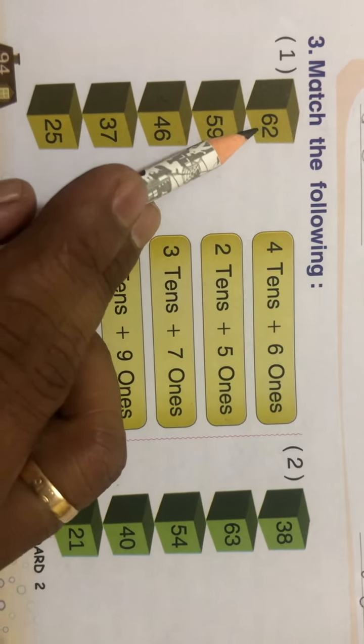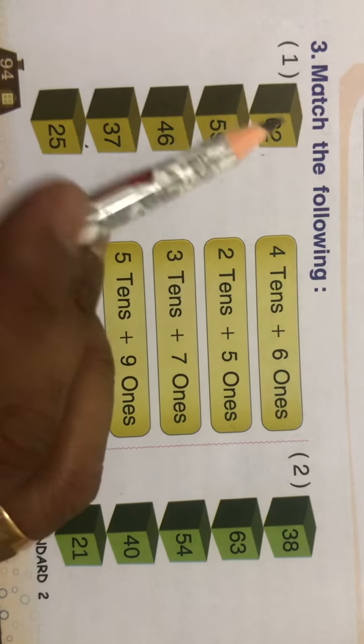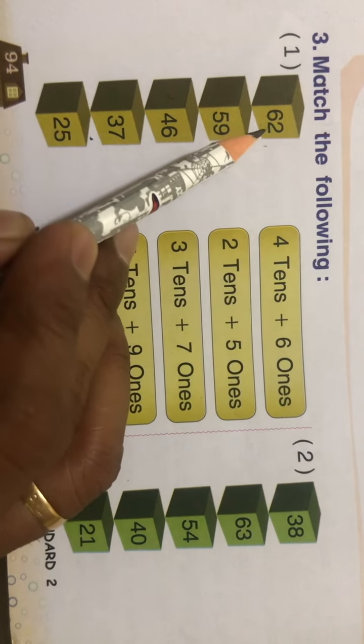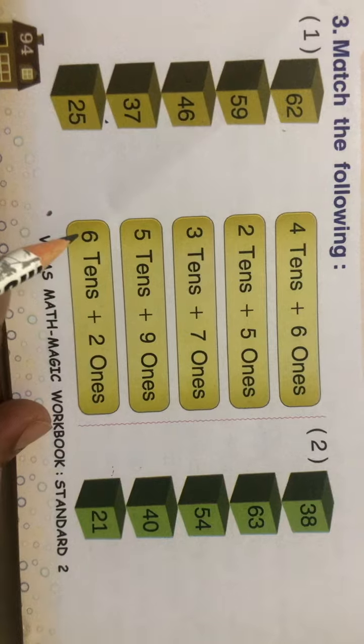Here number is given and here the expanded forms are given. First, sixty-two. Here six is at tens place, so six tens, and two is at ones place, so two ones. Now find out where it is. See, six tens and two ones.